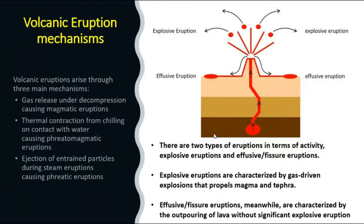Based on the nature of eruptions, volcanoes can be divided into two types. The first is the explosion type, where volcanic eruptions occur through a central pipe by breaking and blowing of the crustal surface due to violent, explosive gases accumulated deep within the earth. Such volcanoes are very destructive.